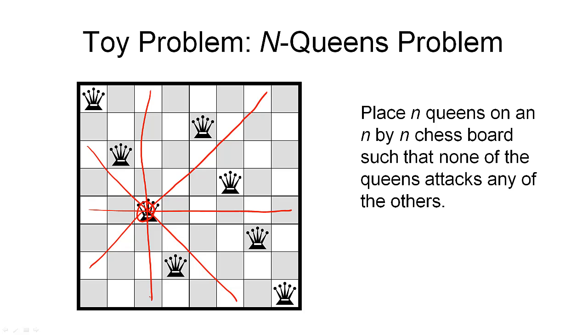You can see this queen attacks none of the other queens and is attacked by none of the other queens. If we look at this queen, however, we can see that if we move all the way along the diagonal, this queen is attacked by this queen. So this configuration shown here is not a solution to the problem.